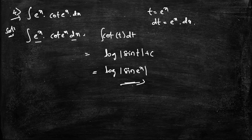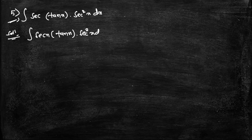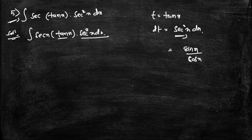Fifth question: integral of secx · tanx · sec²x dx. Let t = tanx, so dt = sec²x dx. Now the integral becomes ∫sec(t)·dt. I'll also explain why d/dx(tanx) = sec²x: writing tanx = sinx/cosx and applying the quotient rule gives cos²x + sin²x over cos²x = 1/cos²x = sec²x.